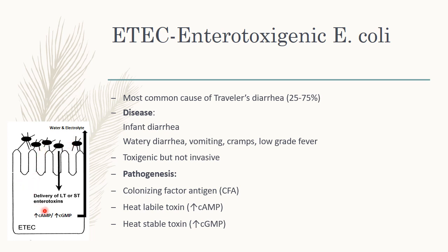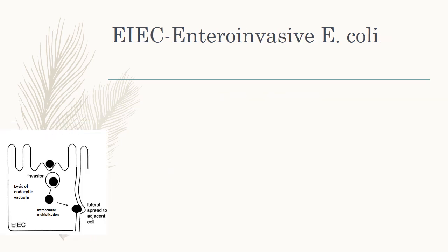Here you can see the delivery of LT (heat-labile toxin) and ST (heat-stable toxin). Both increase cyclic AMP and cyclic GMP respectively, which increases the outflow of water and electrolytes into the gut lumen, resulting in diarrhea. The next one is EIEC, that is enteroinvasive E. coli.